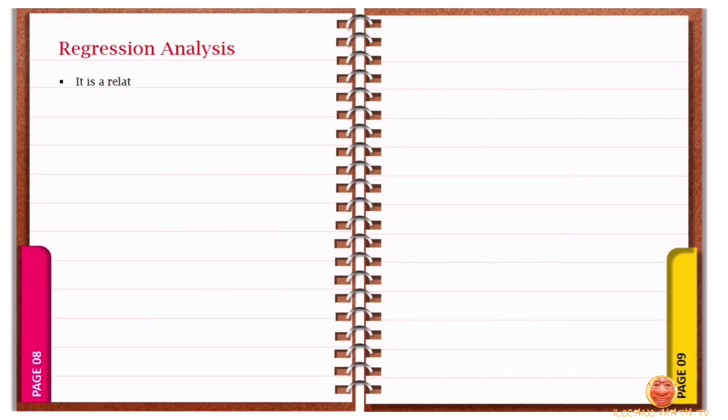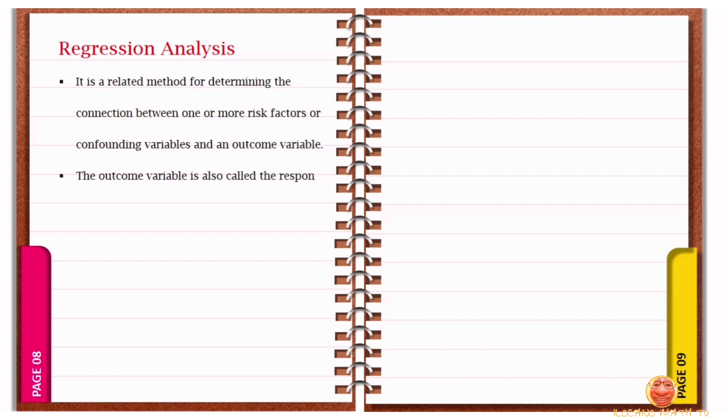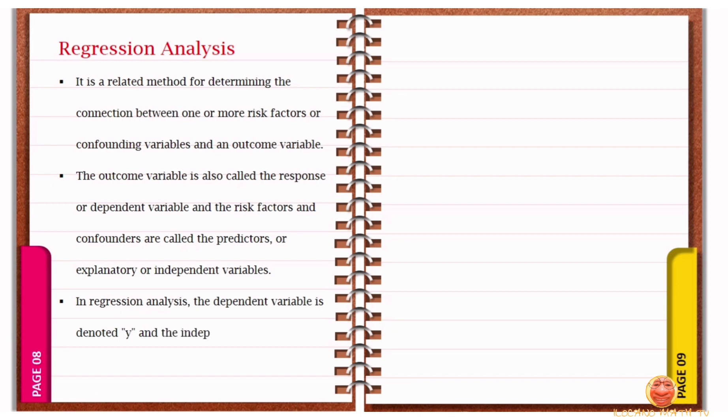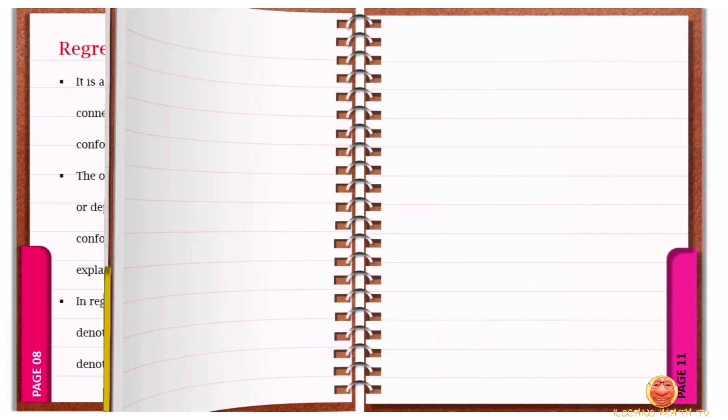When we talk about regression analysis, it is a related method for determining the connection between one or more risk factors or confounding variables and an outcome variable. The outcome variable is also called the response or dependent variable, and the risk factors and confounders are called the predictors or explanatory or independent variables. In regression analysis, the dependent variable is denoted Y, and the independent variables are denoted by X.